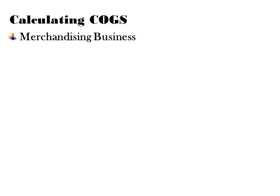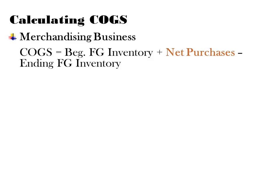Let's look at how we calculate cost of goods sold from a merchandiser's perspective and from a manufacturer's perspective. From a merchandising business's point of view, cost of goods sold is calculated in the same manner as cost of sales in financial accounting. That is, cost of goods sold equals beginning finished goods inventory, plus net purchases, minus ending finished goods inventory.